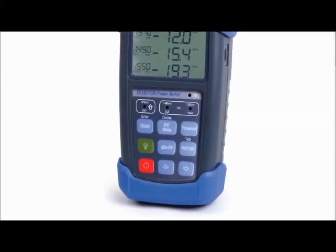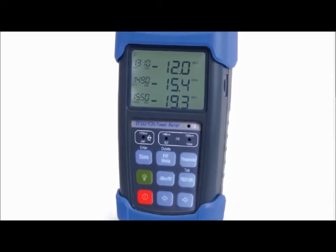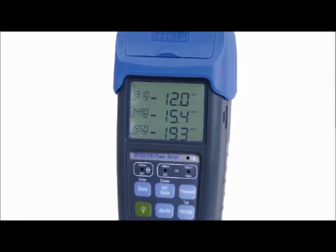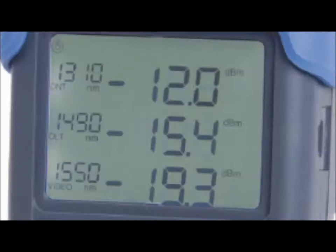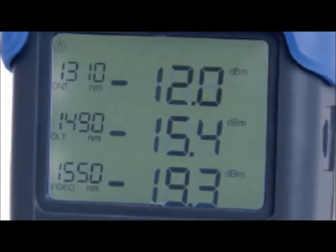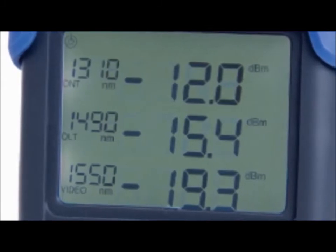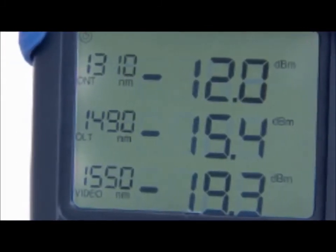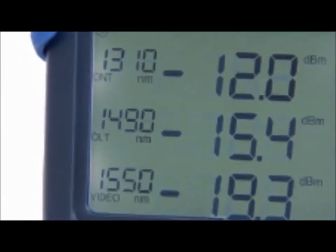The EP310 POND optical power meter is a perfect installation and maintenance tool for E-POND, G-POND and B-POND networks. The EP310 uses pass-through measurements which gives it the capability of measuring all POND signals simultaneously. The upstream signal is a 1310 nanometer wavelength and the downstream signals are the 1490 and 1550 nanometer wavelengths.